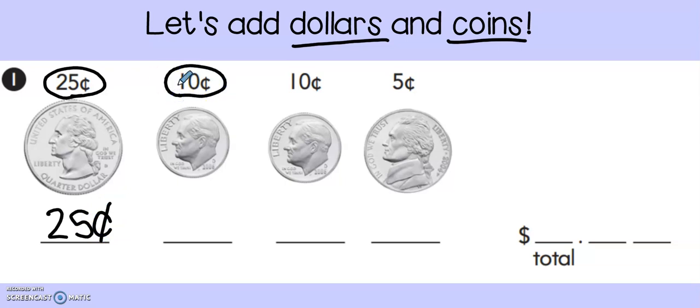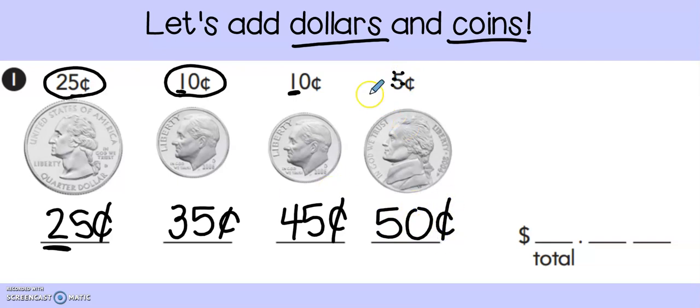Next, I need to add 10 more cents onto that. So I look in the tens place. Right now I have two tens. And I need to add one more ten. So that means now I have 35 cents. And let's add on another ten. That gives me 45 cents. And then I need five more. So 45, 46, 47, 48, 49, 50.